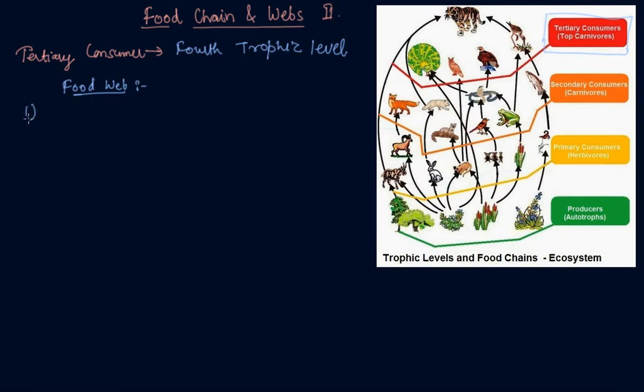The green plants in a terrestrial ecosystem, these are the green plants, they capture about 1% of energy of sunlight that falls on their leaves and convert it into food energy. So our producers, main producers convert only 1% of sunlight into food energy.